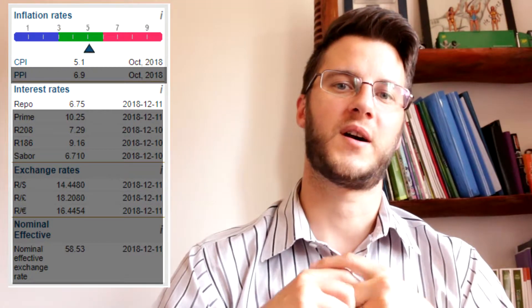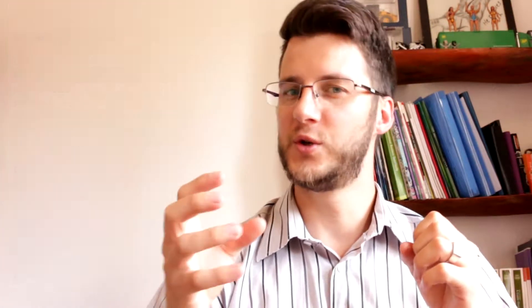The way they use the repo rate to control inflation is if inflation goes up, they will increase the repo rate to make it more expensive for people to buy stuff and to make it more inviting for people to save money. If people can't afford to buy stuff or they save more, the inflation rate tends to either stabilize or go down slightly.